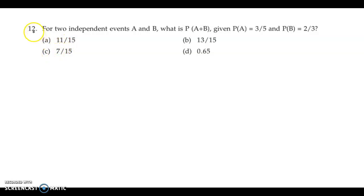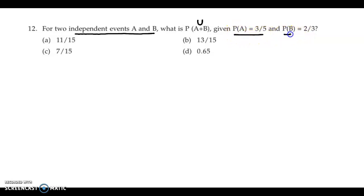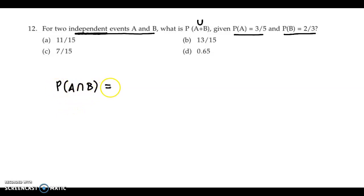Ab question 12 discuss karte hain. For two independent events A and B, what is probability of A plus B — yeh ni probability of A union B — given that P of A is 3/5 and P of B is 2/3. Ab humein kaha gaya hai ki events independent hain, aur humein pata hai agar events independent hote hain, toh hum intersection ki probability easily dhund sakte hain multiplication theorem ke help se. So P of A intersection B could be obtained as P of A into P of B.